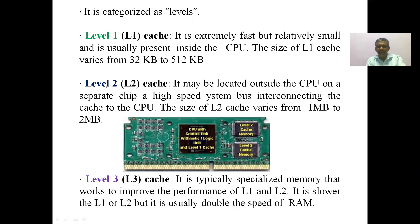Level 2 cache is located outside the CPU on a separate chip. A high-speed system bus interconnects the cache to the CPU. Level 2 is also cache memory but is located outside the CPU — it is a motherboard-resident memory. The size of Level 2 cache varies from 1 MB to 2 MB.